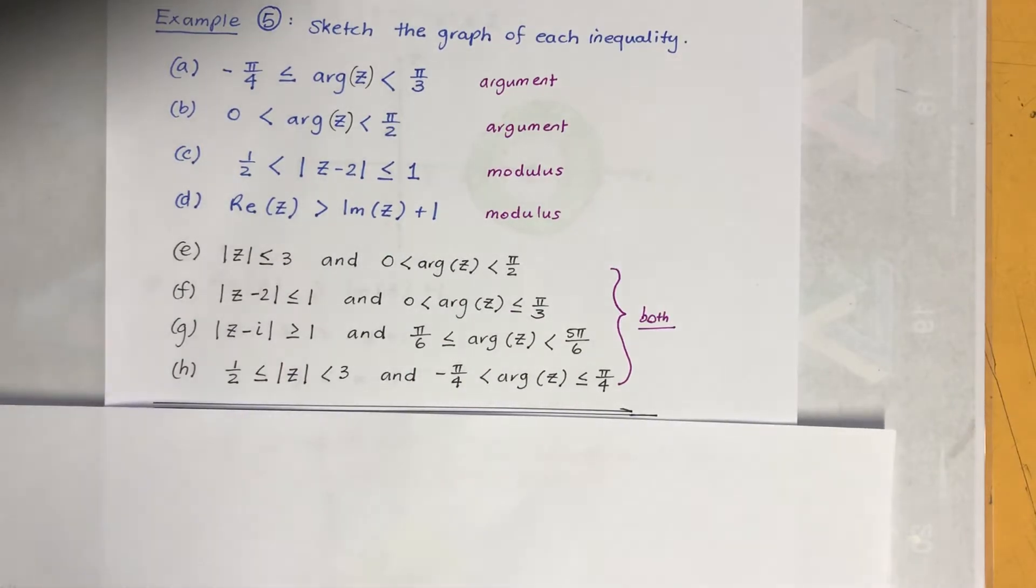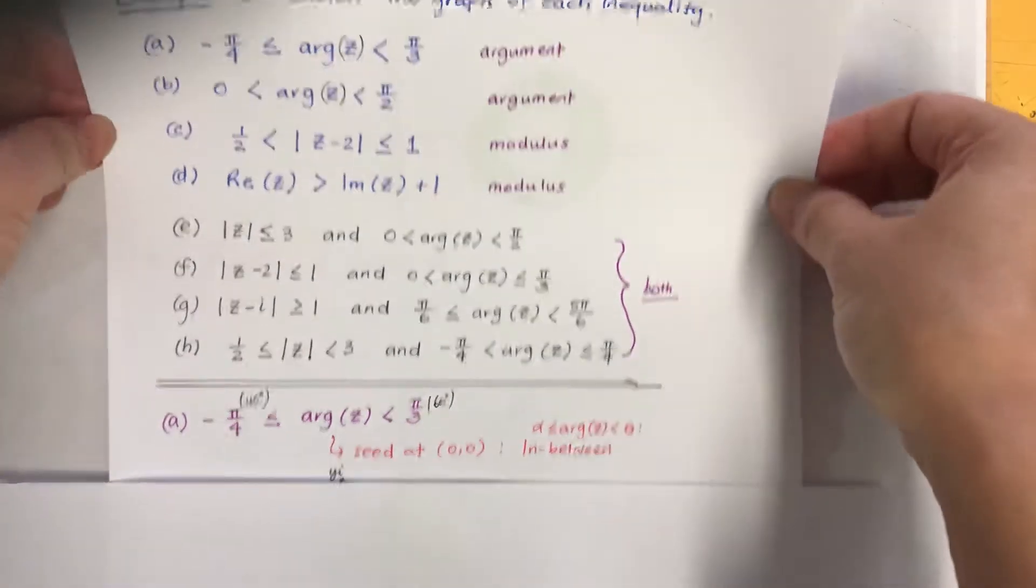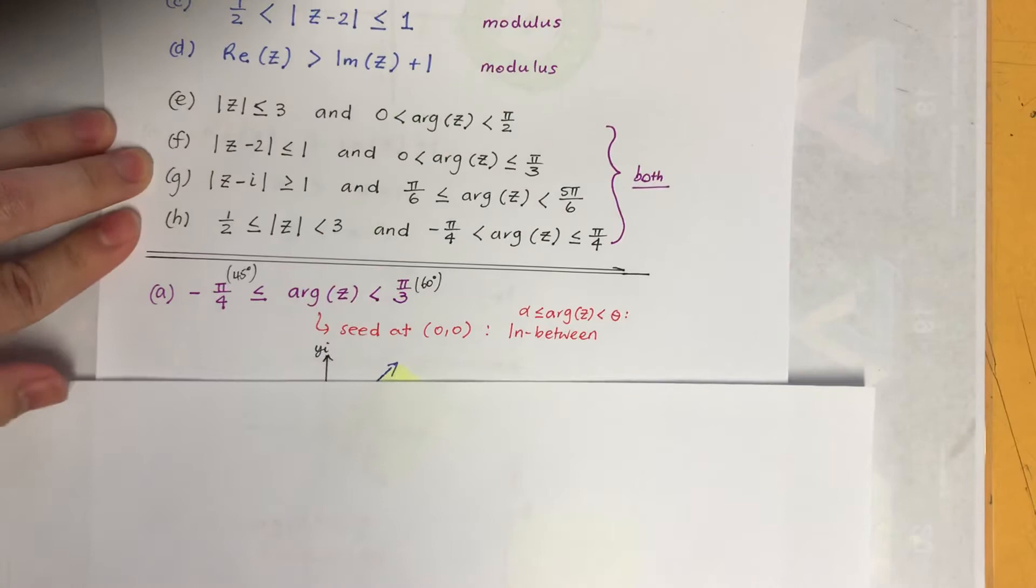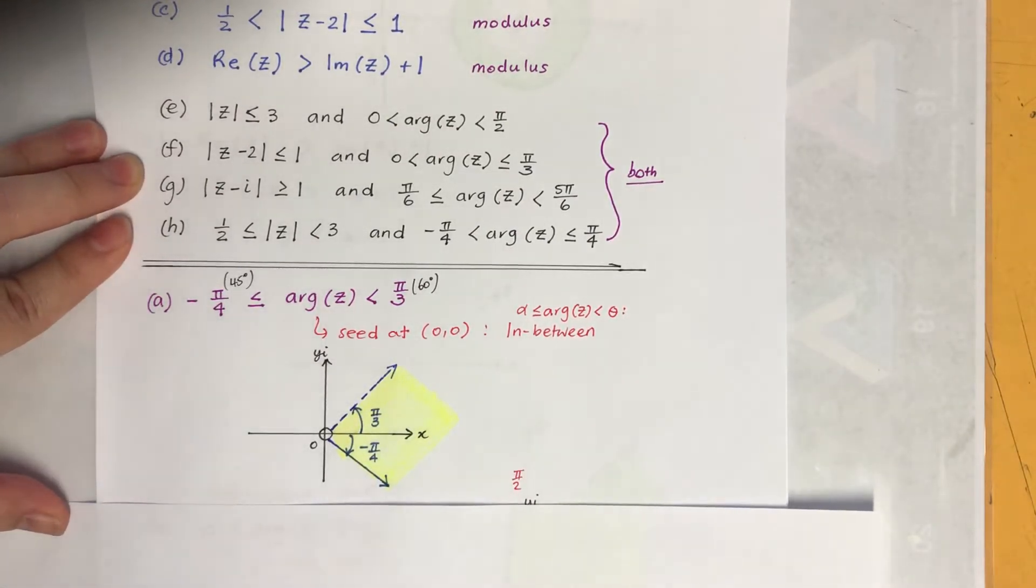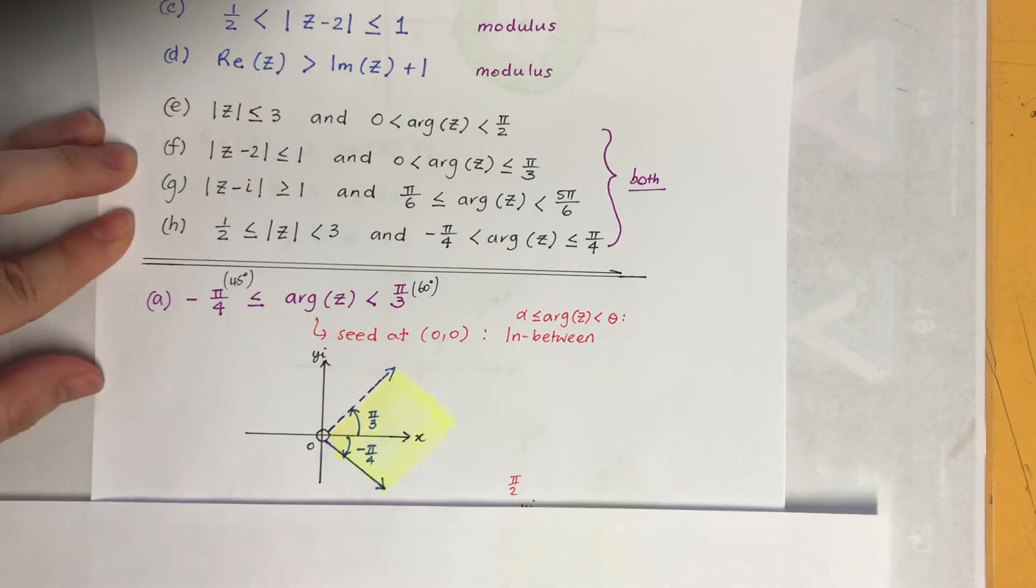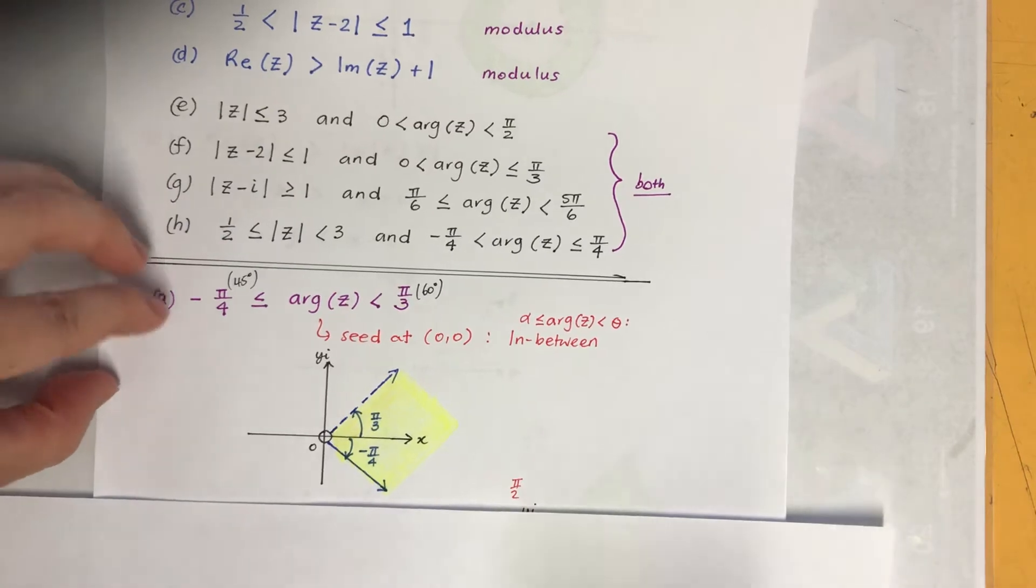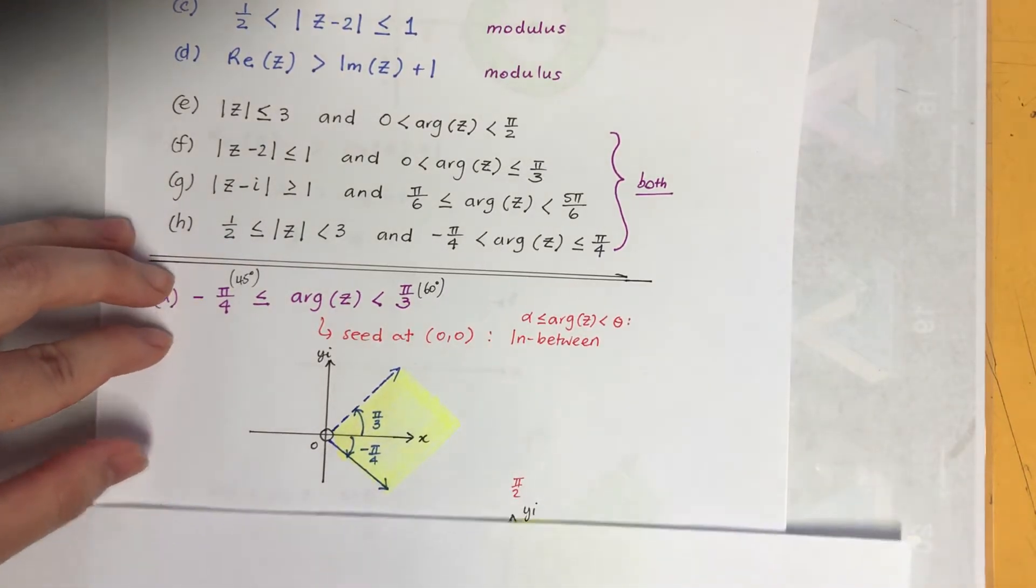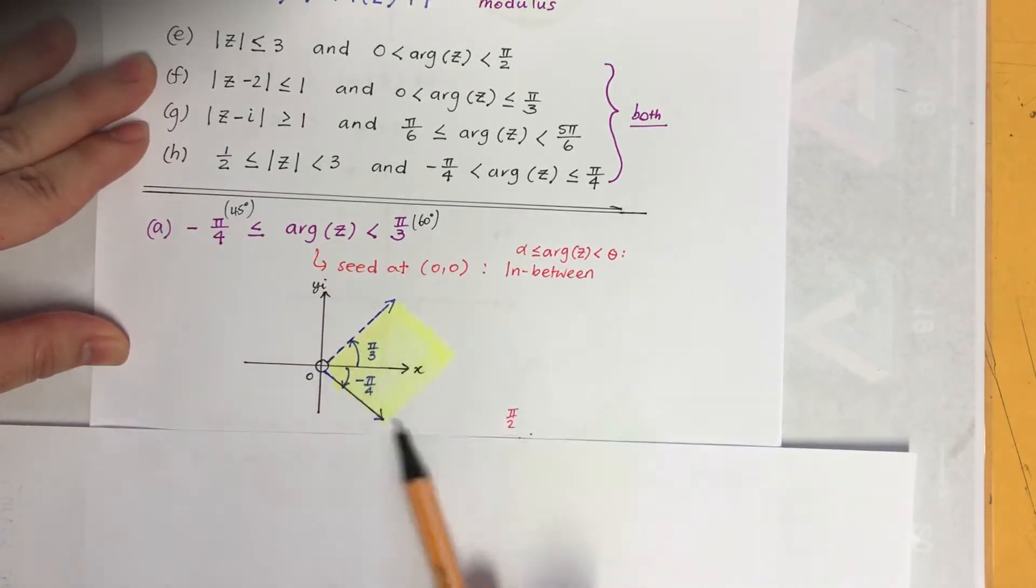Let's have a look at the first one. First one is argument we're using. Because these inequalities, we can't just pinpoint just one thing now, it's a group of the points. Argument is, the starting point is zero zero and it goes from minus 45 to 60, so it will look like this.